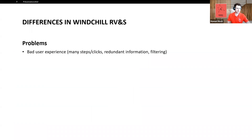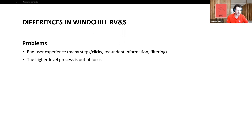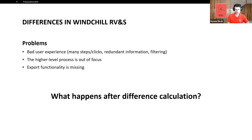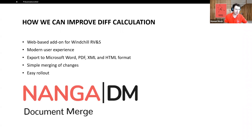To summarize the problems with the built-in solution: we have a slightly poor user experience — it works but could be better. There are many steps and clicks, sometimes redundant information, and filtering is not ideal. The higher-level process seems out of focus — it's just a tool to generate differences, nothing more. There's no export functionality, and the big question is: what happens after a difference calculation? Normally you want to do something afterwards, like make changes, which is not possible with the built-in difference view.